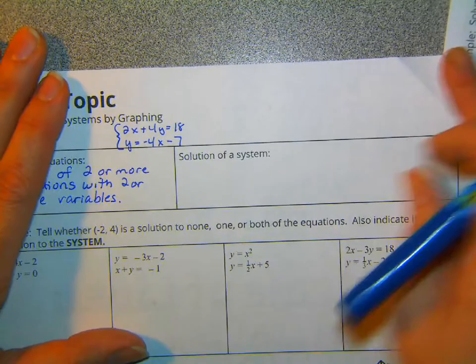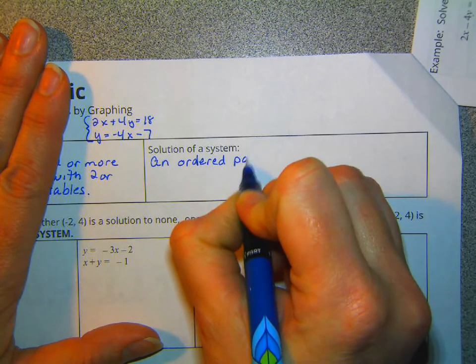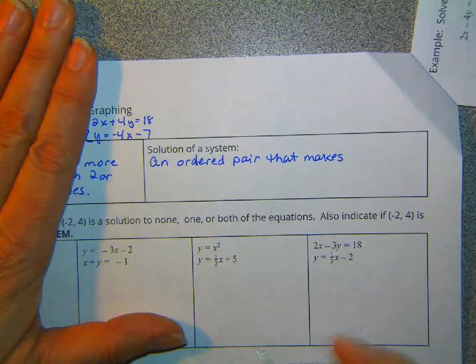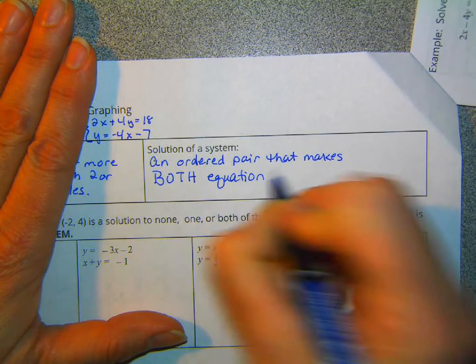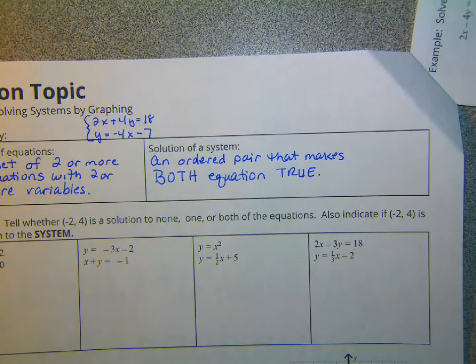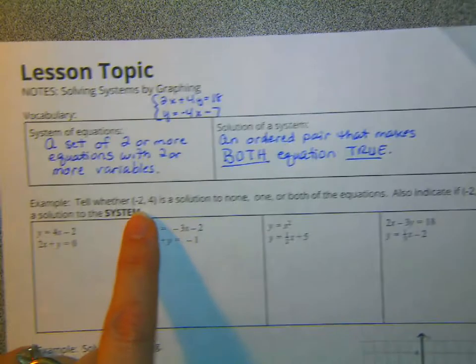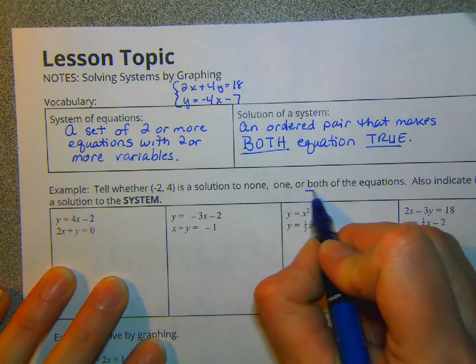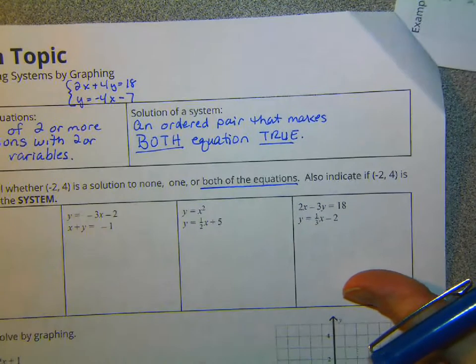What is the solution to a system? A solution of a system is an ordered pair that makes, and this is important, both equations true. And I say both in this case because we are only working with two equations with two unknowns, or two variables. So I mean both equations true. So given that, this next example, it says tell whether (-2, 4) is a solution to none, one, or both of the equations. If it's a solution to both of the equations, it's also called a solution to the system.